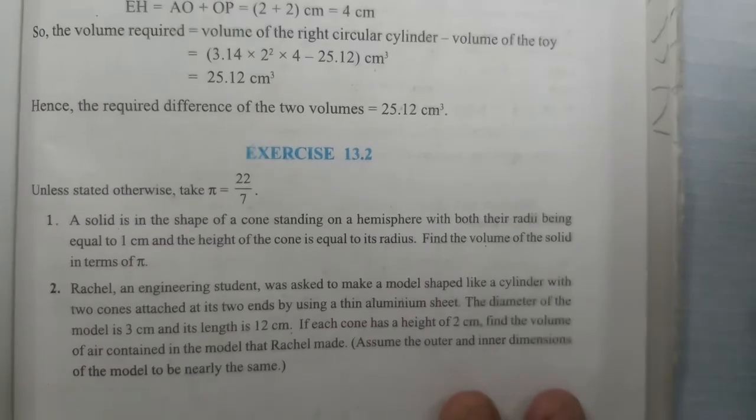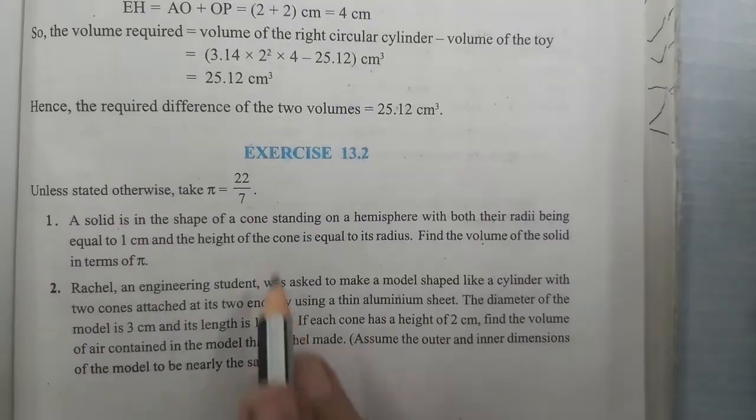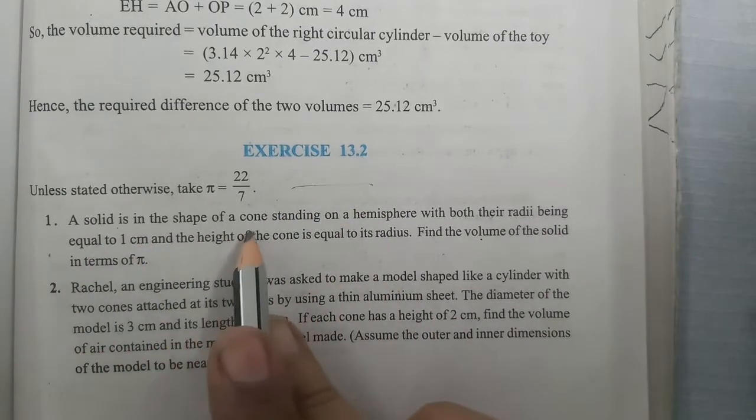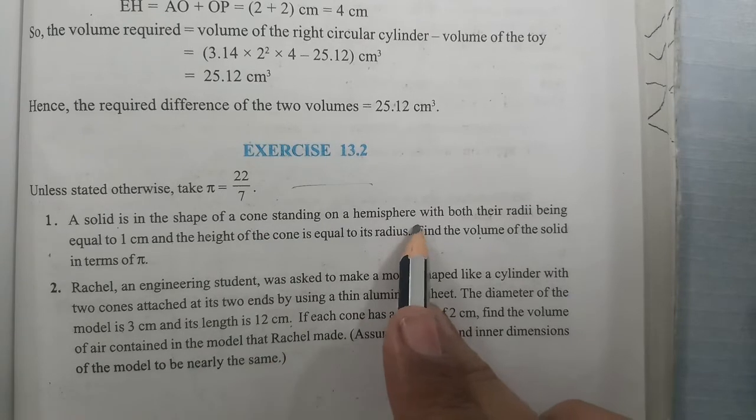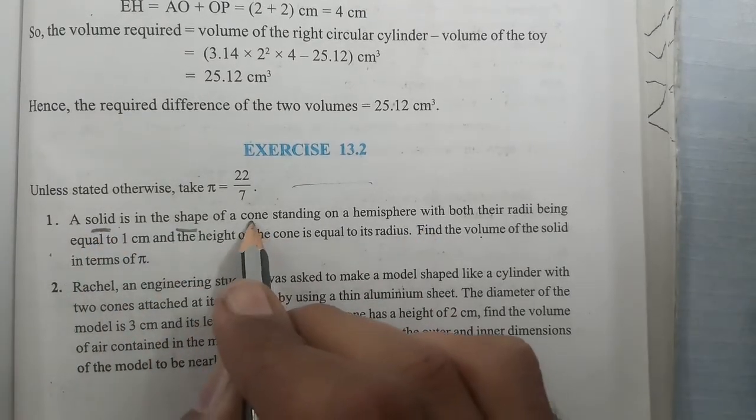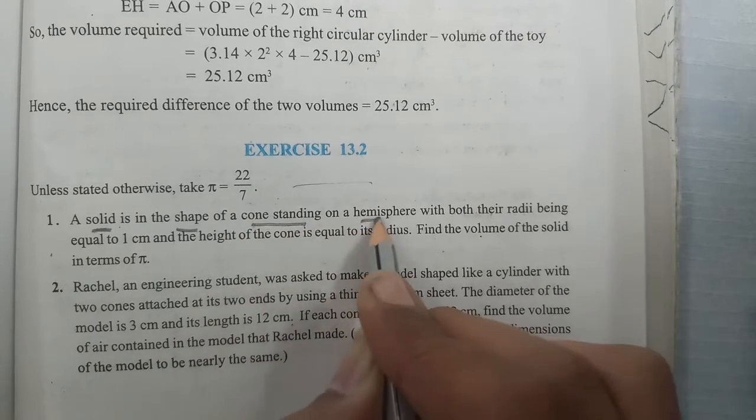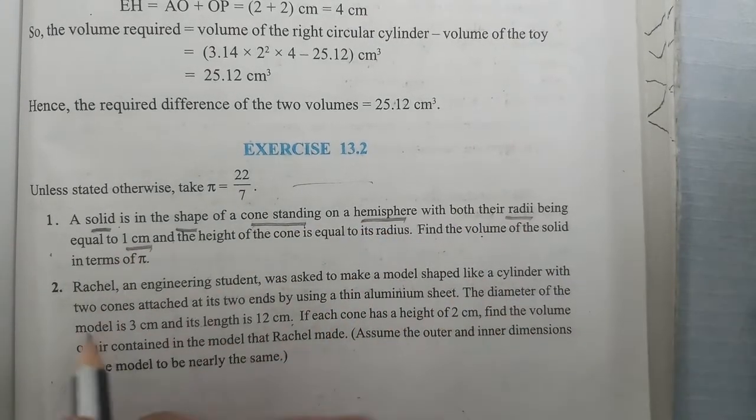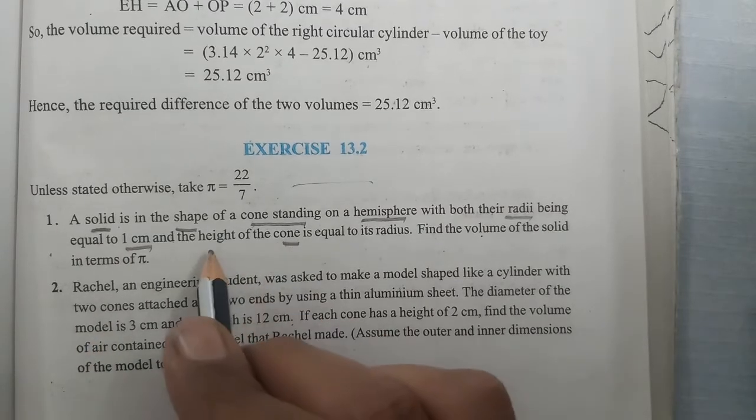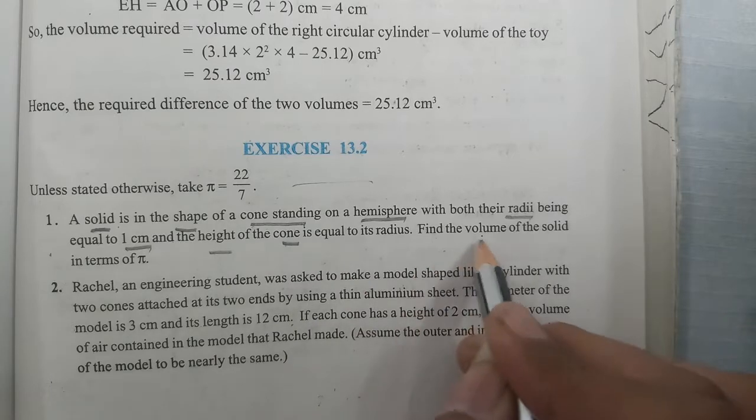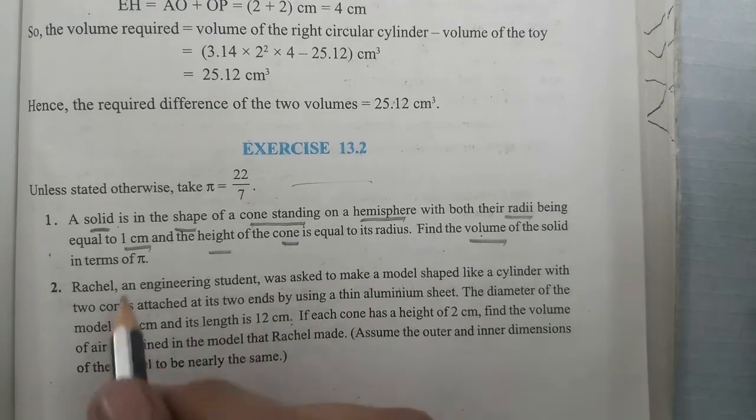Hello students, in this session we are going to start with Exercise 13.2, question number first. A solid is in the shape of a cone standing on a hemisphere. The solid has a cone on top of a hemisphere. Both have radius one centimeter and the cone's height is also one centimeter. We need to find the volume of this solid in terms of pi, without putting the value of pi.